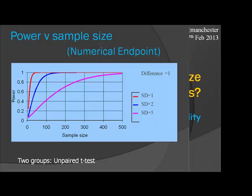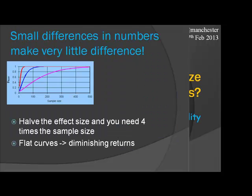You can also look at very similar curves with the difference held constant and increasing the standard deviation. When you increase the standard deviation — the spread between people in your study — the power drops off, or you need larger numbers. One rule of thumb: if you halve the effect size you're looking for, say looking for 3mm rather than 6mm, you need four times as many subjects to get the same power.